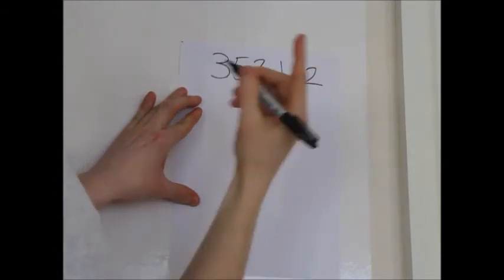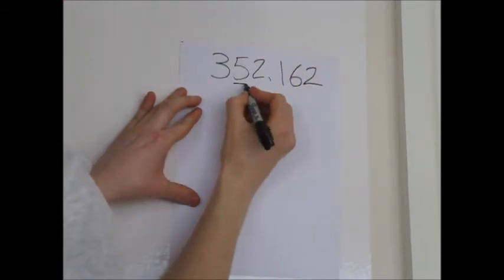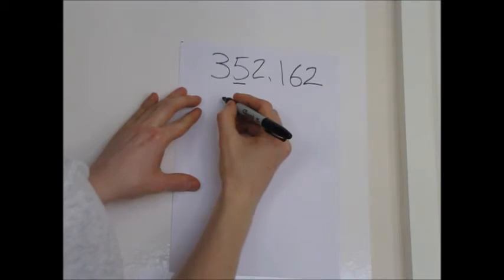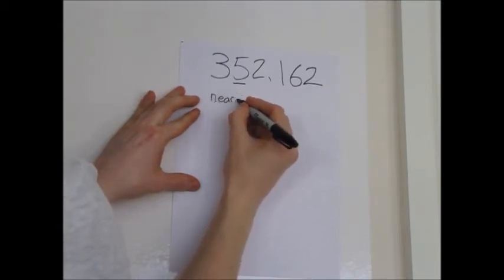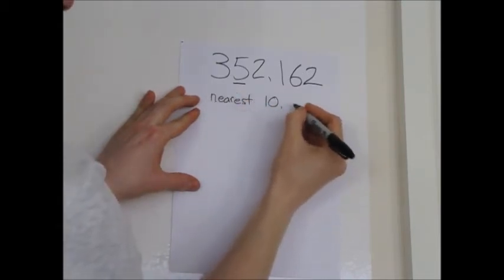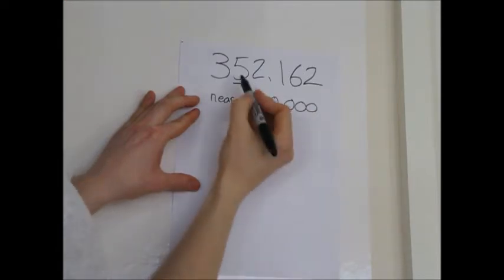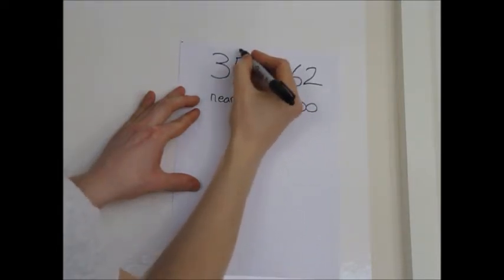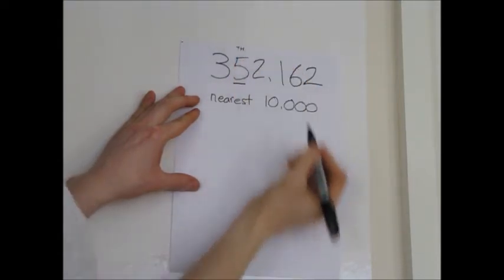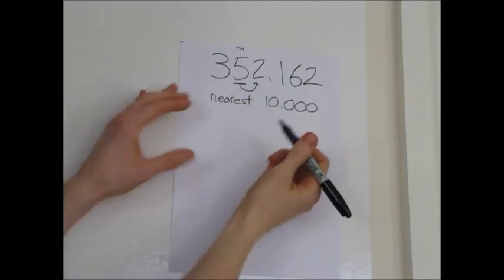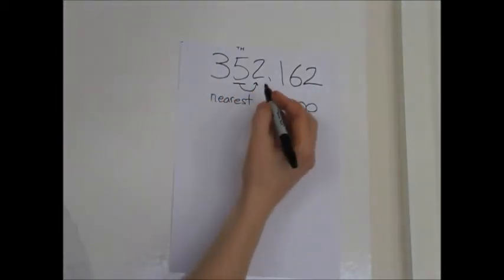352,162. This time we are going to round it to the nearest ten thousand. Okay, so it will say something like this: nearest ten thousand. So I'm going to find my place, it's the five because I know that's the ten thousands column. I'm going to look next door, to the right. It's a two, so we're going to round down.